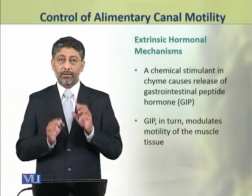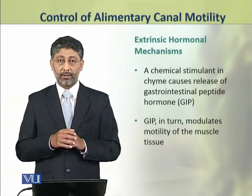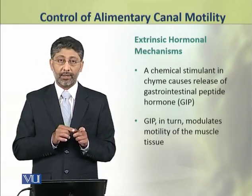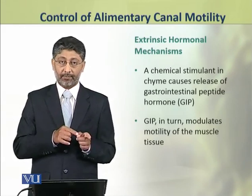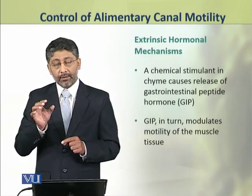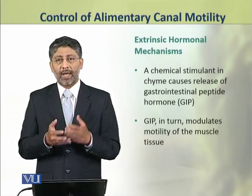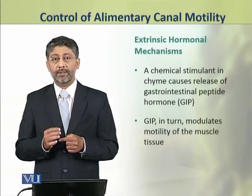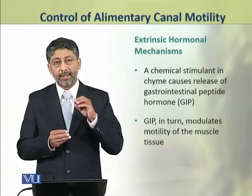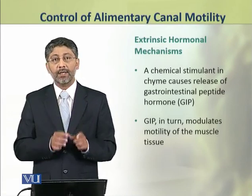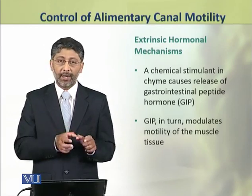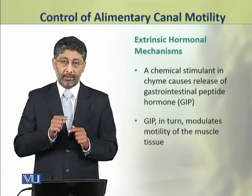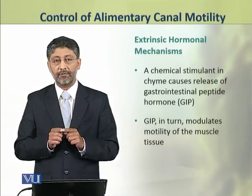Now we shall discuss the extrinsic mechanisms. First we shall discuss the extrinsic hormonal mechanisms. Chyme contains many types of chemicals obtained through food, and some of these chemical substances in chyme act as stimulants which cause the release of gastrointestinal peptide hormone GIP. GIP in turn modulates the motility of the muscle tissue.